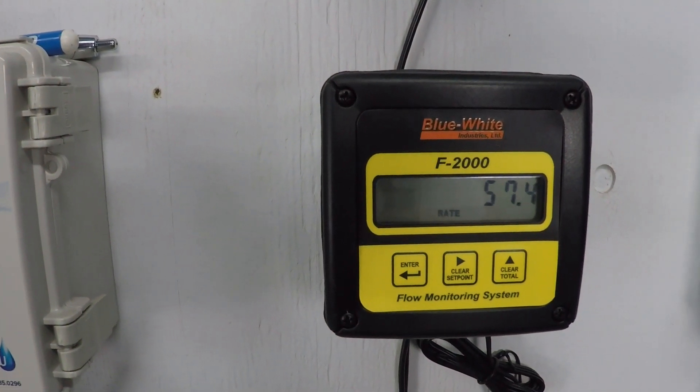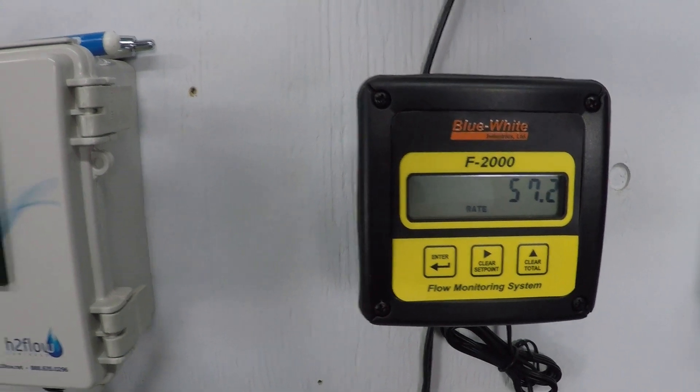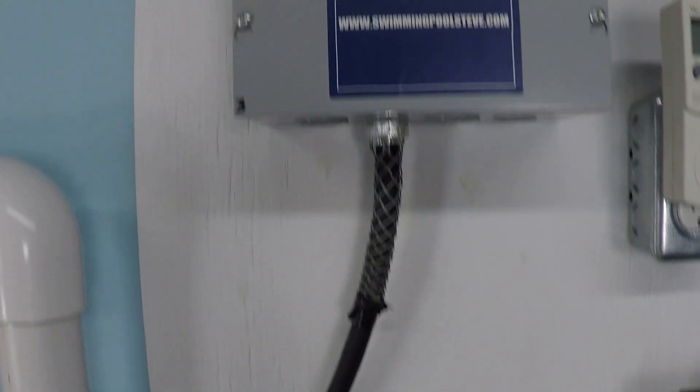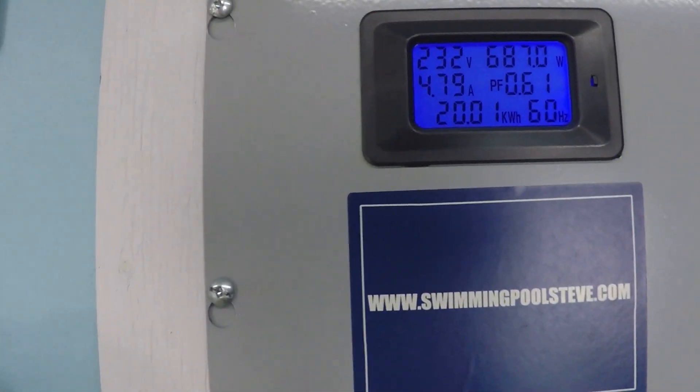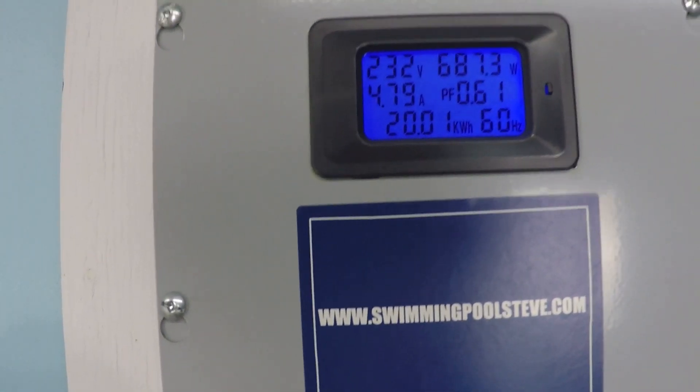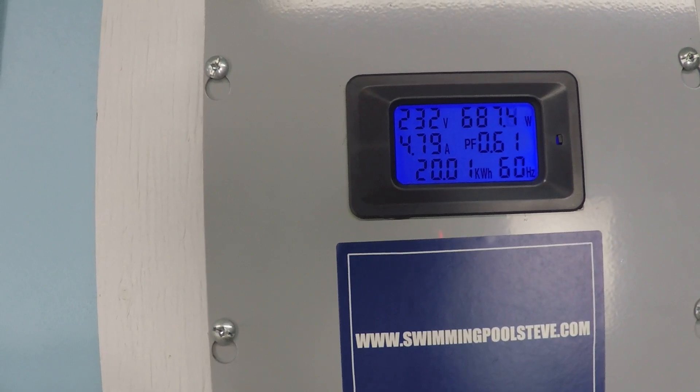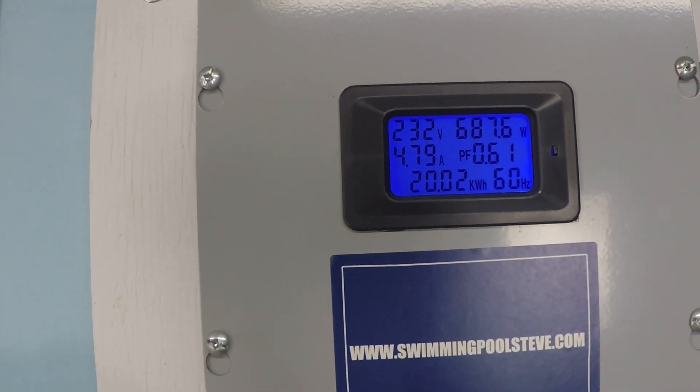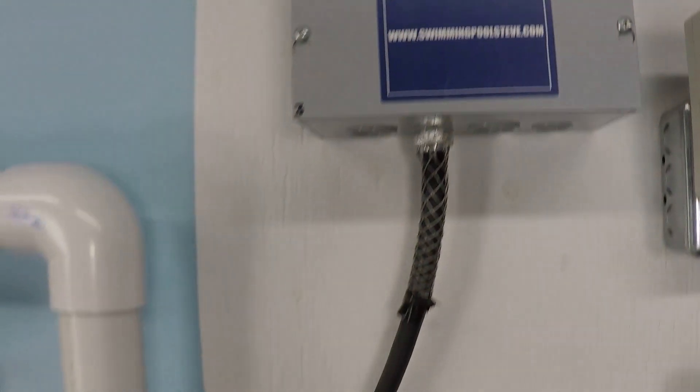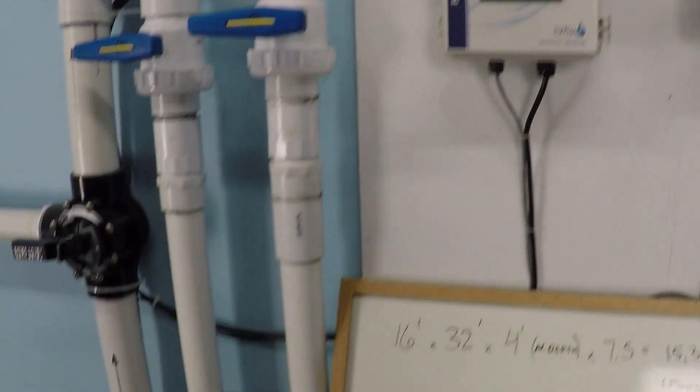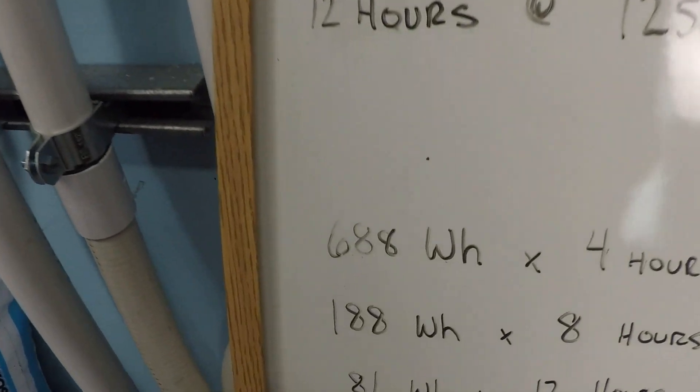So let's go ahead and run that 2800 RPM. 57 and a half gallons per minute, approximately. 687 and a half watts. 688 as I have it.